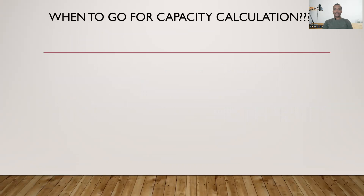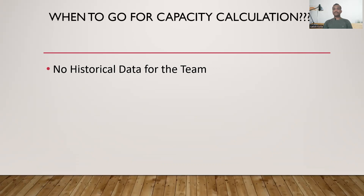When do we go for the capacity calculation? When we don't have any historical data for the team — when the team is starting new with the Agile implementation, or this is the first time the team is doing Scrum, or going for the first sprint planning. That's when we generally go for the capacity calculation. And when the team is a new Agile team, that is also when we consider the capacity calculation.